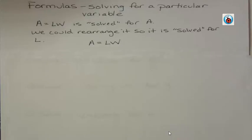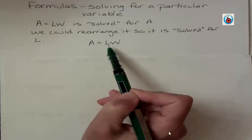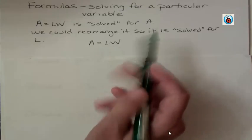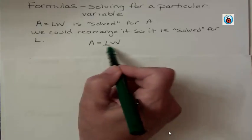How would we do that? Well, if we have A equals LW and we don't want A to be by itself, we want L to be by itself. So what's the variable that needs to move? Well, it's W. How would you get rid of something that's being multiplied?